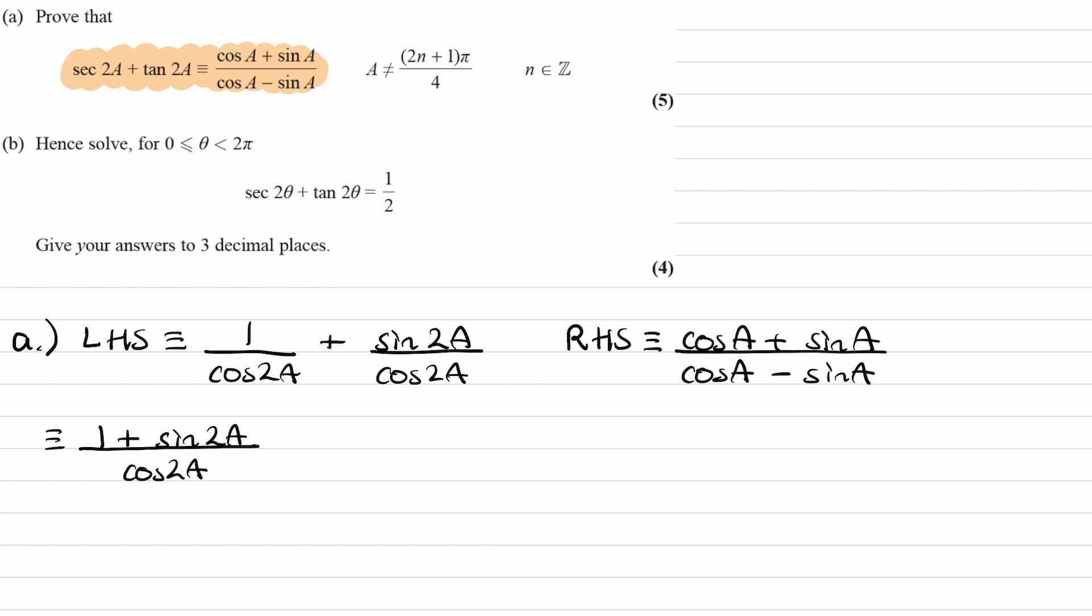So, notice how, if we were to multiply top and bottom by cos a plus sin a, well, looking at the bottom first of all, what we have here, this is the difference of two squares. When you multiply those two things together, you'll end up with, the denominator will be cos squared a minus sin squared a, and that is the same thing as cos 2a.